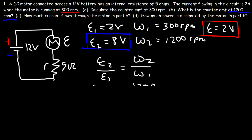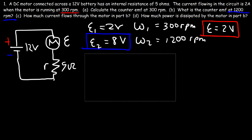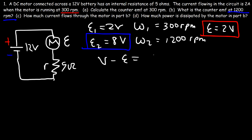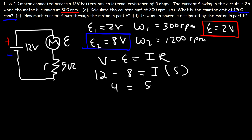Part c: how much current flows through the motor in part b? Going back to the equation V minus counter EMF equals IR: the battery voltage is 12, the counter EMF from part b is 8 volts, and the resistance is still 5 ohms. 12 minus 8 is 4. Dividing both sides by 5, the current is 4 divided by 5, which is 0.8 amps.